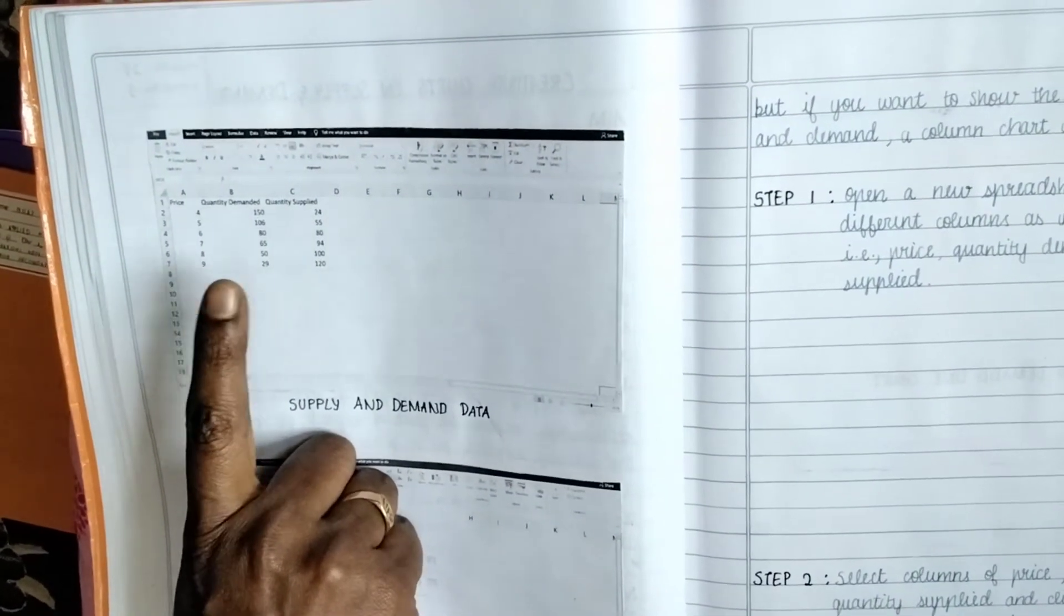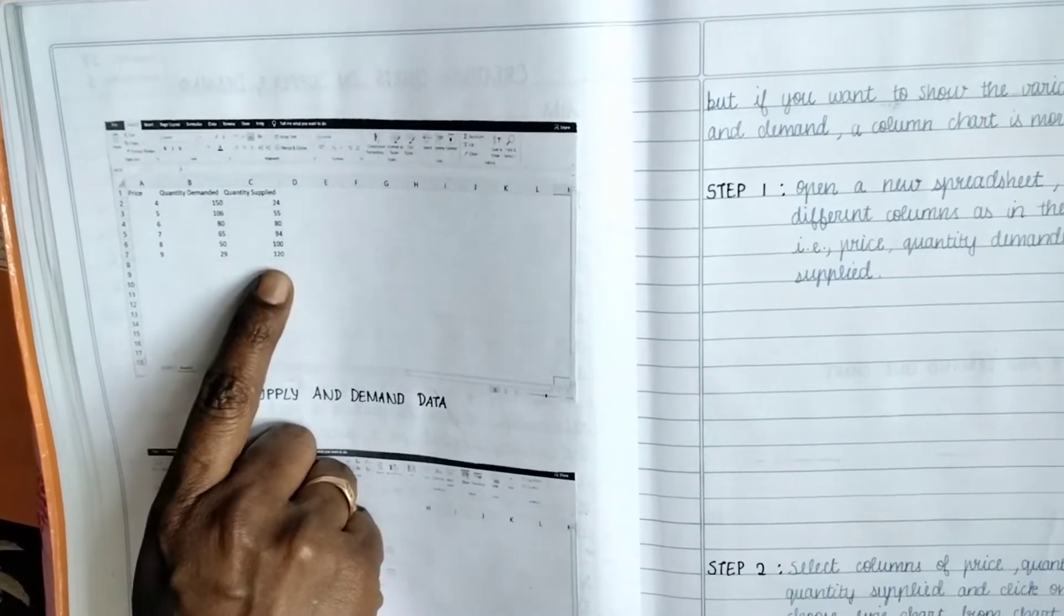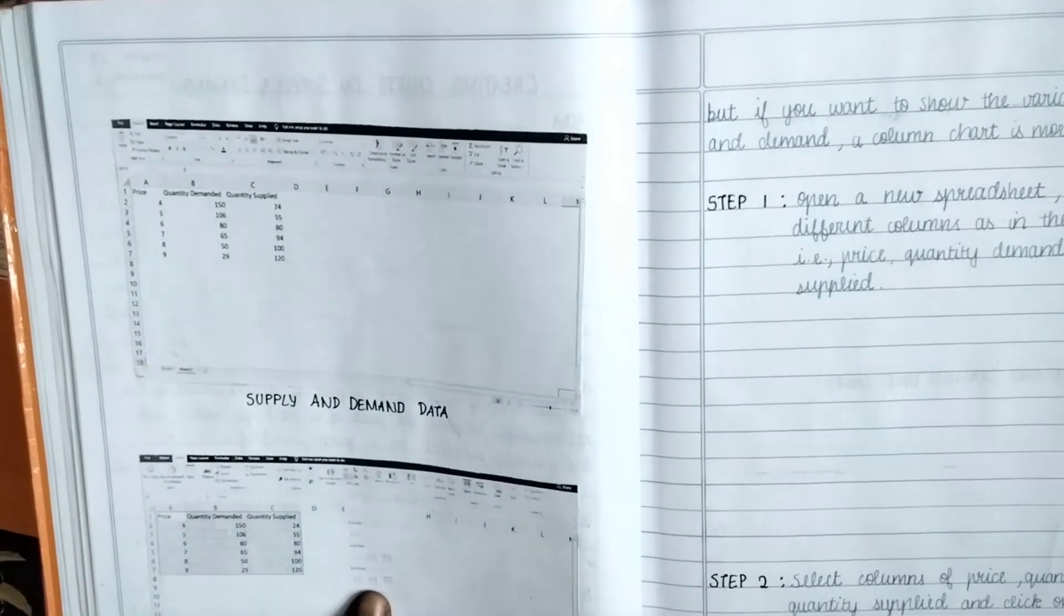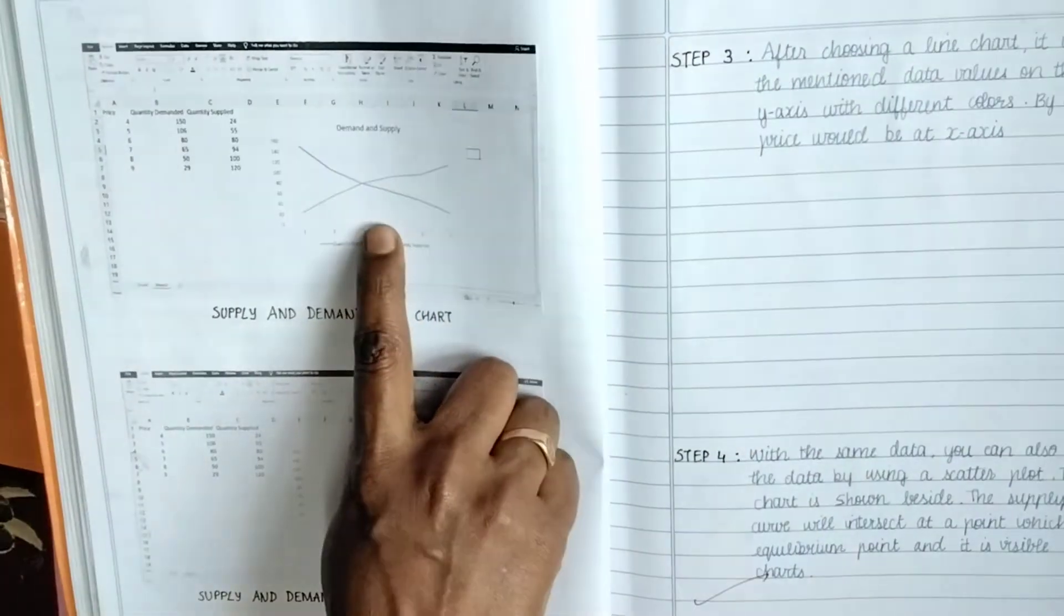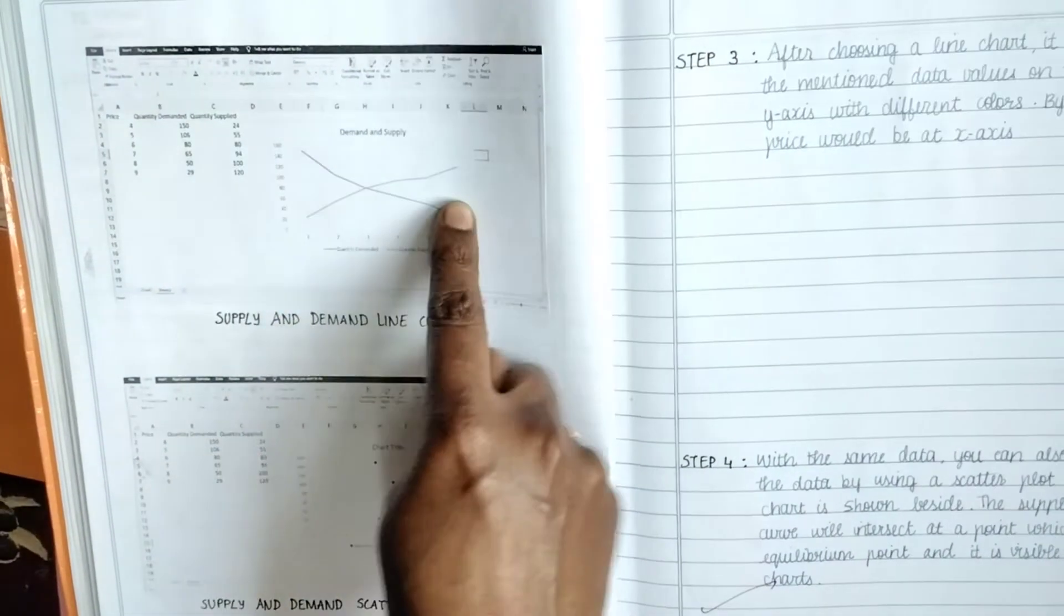Calculated what is the price, what is the quantity demanded, what is the quantity supplied. And with the same thing we did, see here, the line chart, how will the line chart look. See the demand here and this is the dotted line points.